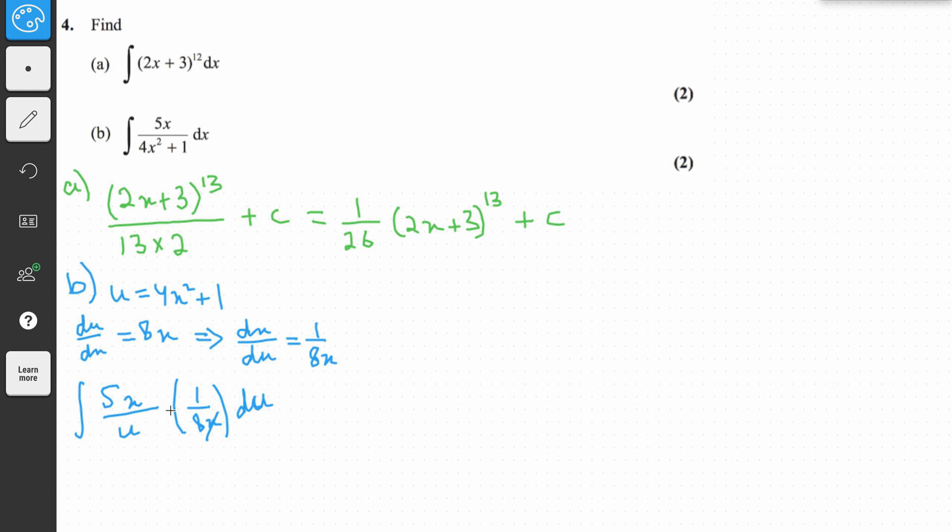Now we cancel both the x's and we're left with 5/8. 5/8 of u, so 5/8 comes out of the integral and then 1 over u with respect to u. Now when we integrate this we get the natural log of u, and we have to just put the constant as it is. So it's 5/8 natural log of u plus C.